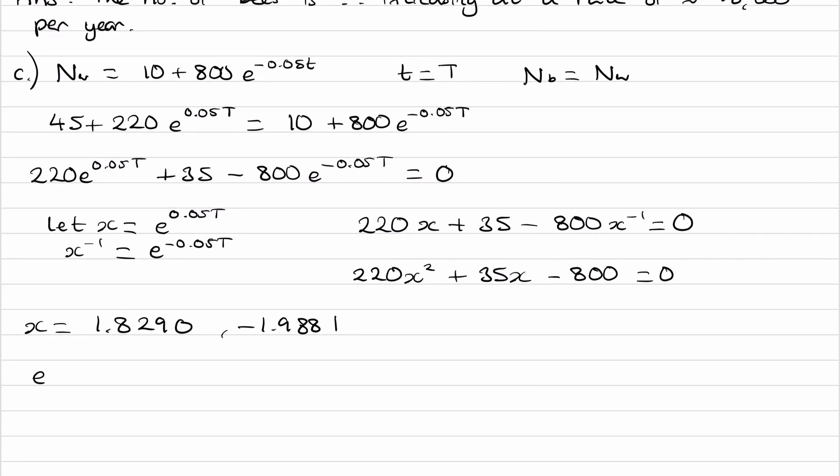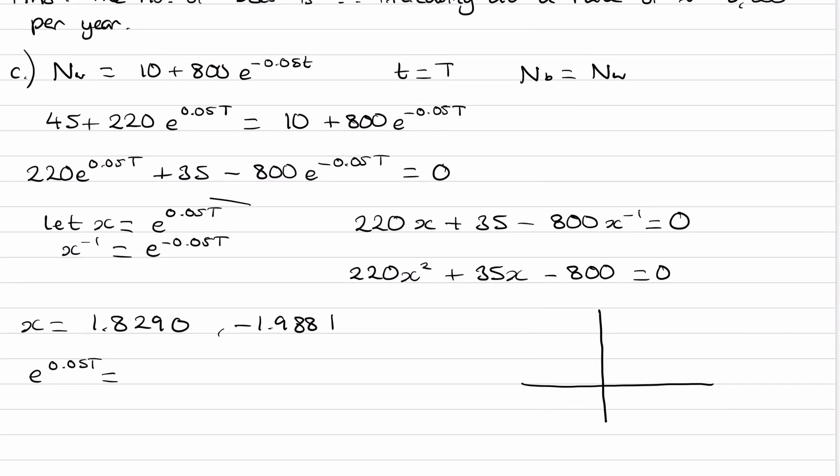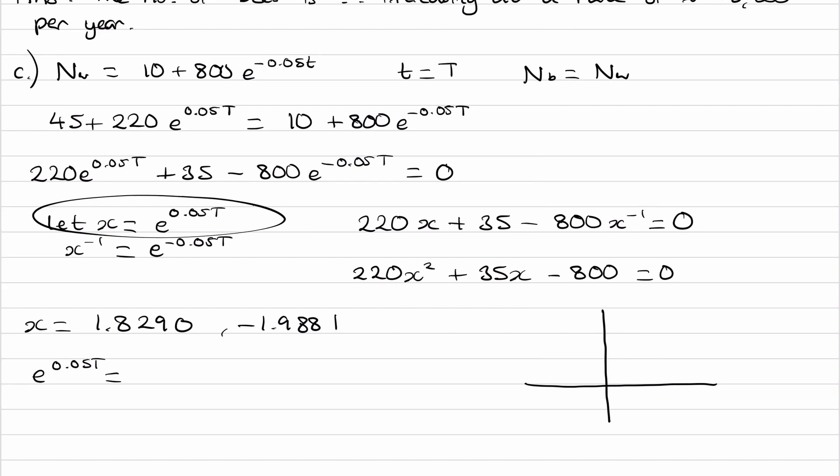Remember that x equals e to the power of 0.05T. If we think about a graph of this equation, where this is x and this is t, that would look like this. So the x value never becomes negative. So for that reason, we can't have this as a solution.